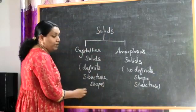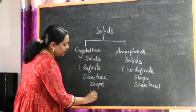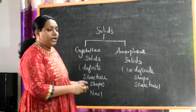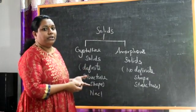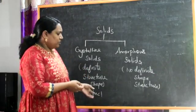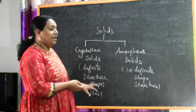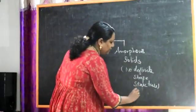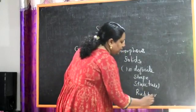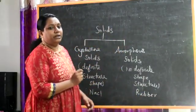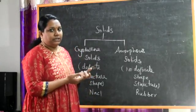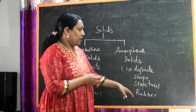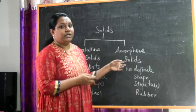The best example of a crystalline solid is sodium chloride — the common solid we use in our kitchen. Sodium chloride has a definite structure, so it is classified as a crystalline solid. For amorphous solids, the best example is rubber. You can use rubber with a pencil — it has a definite shape. Rubber is a solid, but it comes under the classification of amorphous solids.